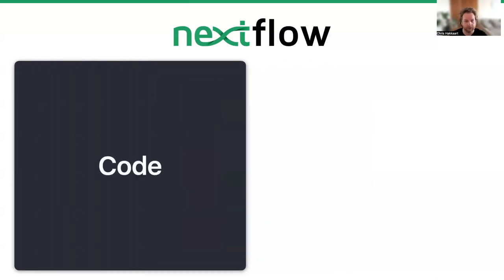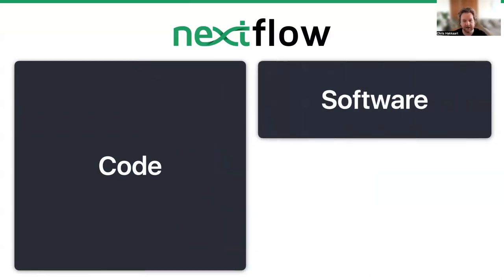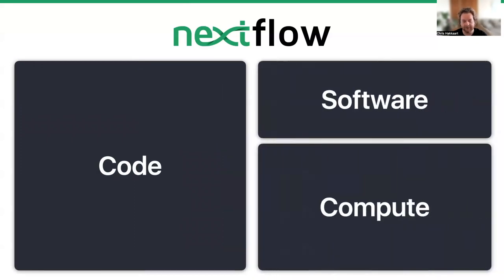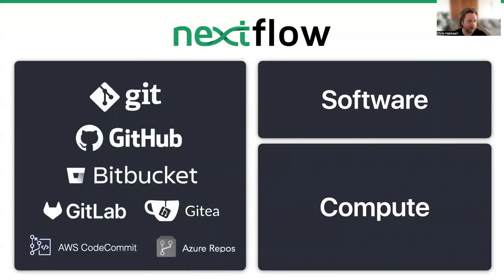Nextflow also has a lot of reusability. Many things we'll talk about lead into this idea — because the pipeline is portable and you can have all your software and versions contained as part of Nextflow, it can be very reusable across different sites by different people. Nextflow has automatic integration with your favorite version control software such as Git, GitHub, Bitbucket, GitLab, and Gitea, allowing for exact version controlling of a pipeline as it develops over time.